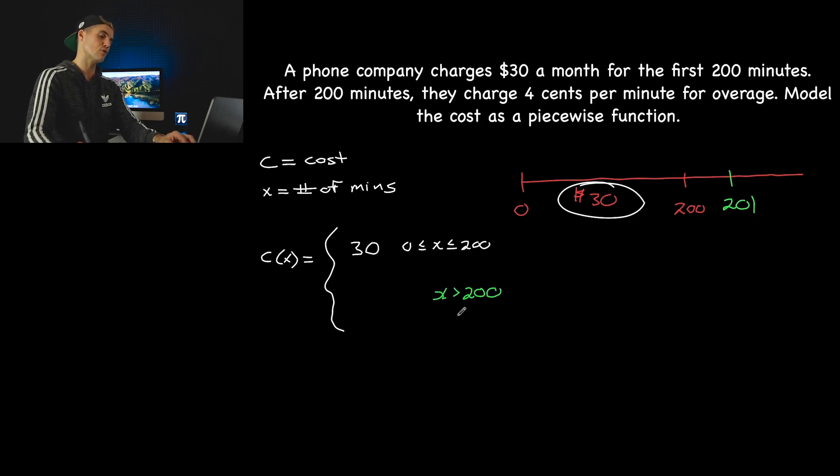So the question is, if you use the phone for greater than 200 minutes, what's going to be the equation that we put here that's going to represent the charge? Well, let's think about this. You're definitely going to get charged the $30 no matter what. And then you're going to get charged $0.04 per minute for any overage minutes over 200. So how can we represent that?